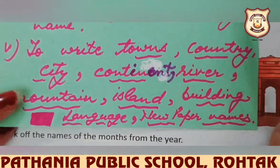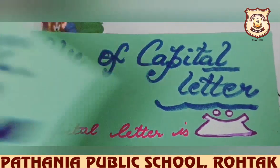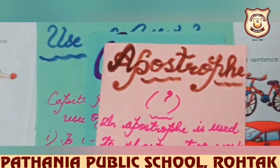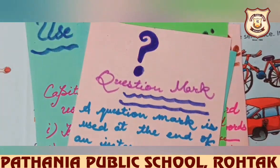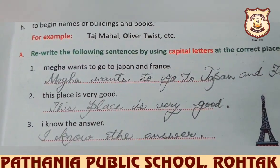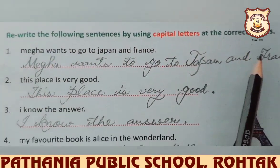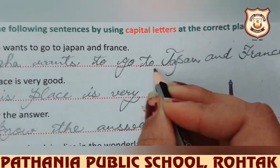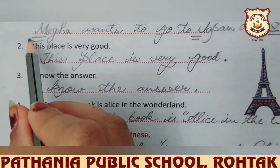So I hope you all know where to use capital letters, semicolon, colon, apostrophe, exclamation mark, comma, question mark, and full stop. Now we will proceed with our exercise part. Part A: 'Megha wants to go to Japan and France.' You have to use capital letters wherever necessary. So 'Megha' — M capital, 'Japan' — J capital, 'France' — F capital, all proper nouns.